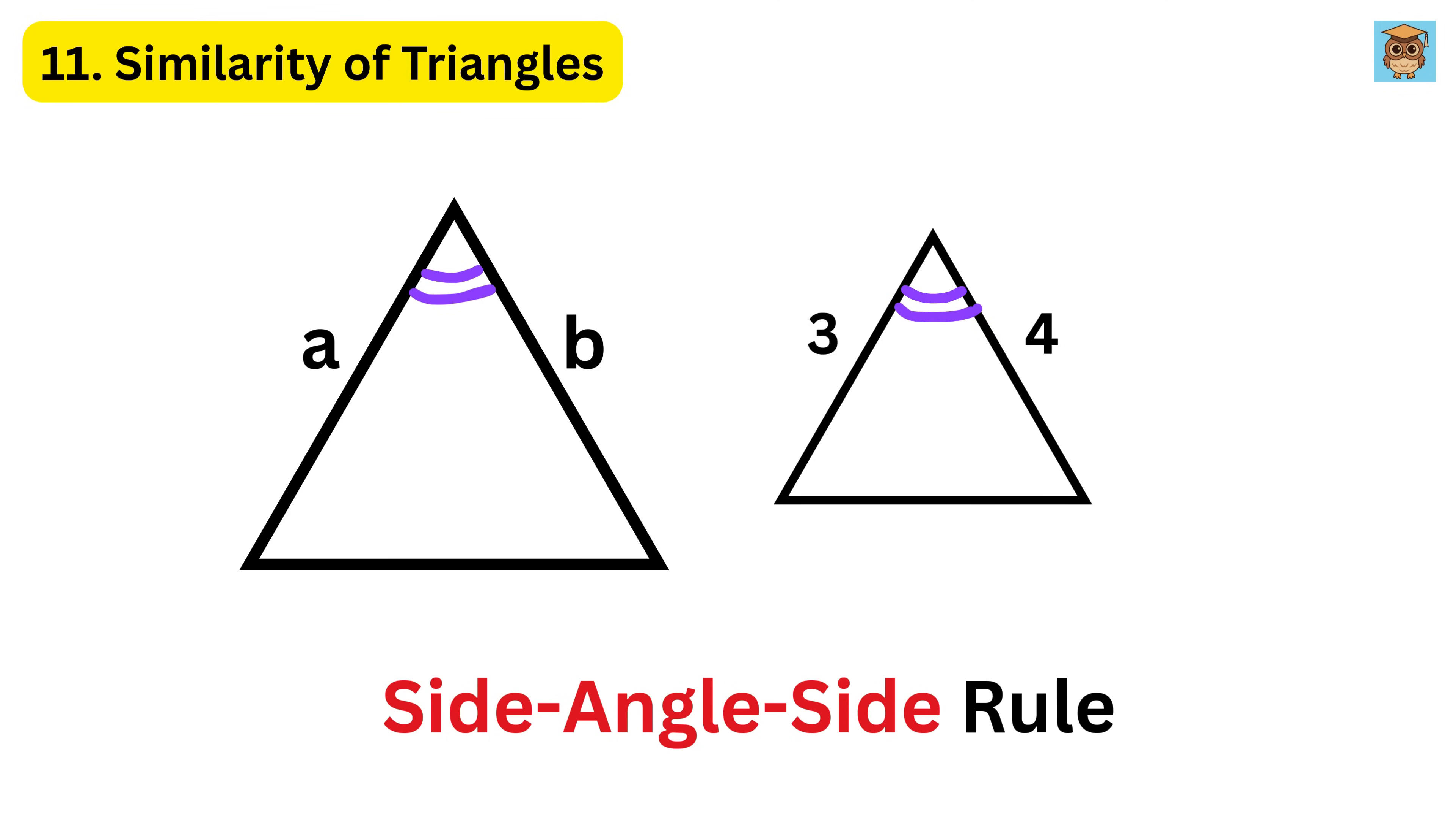For example, if one triangle has sides 3 and 4 with an angle of 60 degrees between them, and another triangle has sides 6 and 8 with the same 60-degree angle, they are similar because 6 is twice of 3, and 8 is twice of 4.